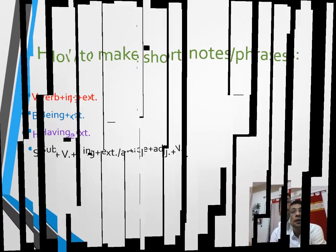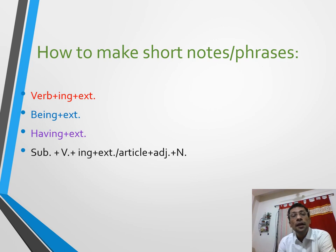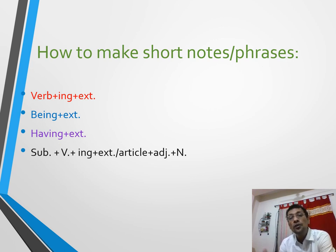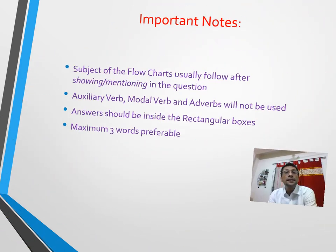Flowchart is really very tricky and requires strategy. You must follow the strategy to make the short notes. The structures for short notes are: verb+ing plus extension, or being plus extension, or having plus extension, or subject with verb+ing plus extension which can form a noun phrase, or noun plus information to make an adjective phrase. Remember, there are four structures shown in this slide, and you have to use them depending on the context and grammatical structure of the extract.